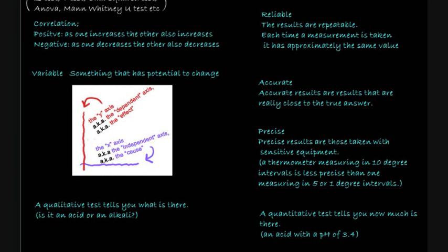Now I think we'll go over a few technical terms you need to know. A variable is something that has the potential to change. When we draw graphs, the dependent variable should go on the y-axis and the independent variable on the x-axis. Accurate results are results that are really close to the true answer. Precise results are those taken with sensitive equipment, so a thermometer measuring in 10 degree intervals is less precise than one measuring in 5 or 1 degree intervals. A qualitative test tells you what is there, so is it an acid or an alkali. A quantitative test tells you how much is there, so an acid with a pH of 3.4.